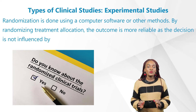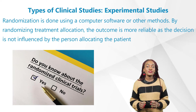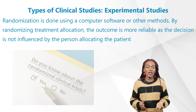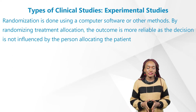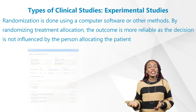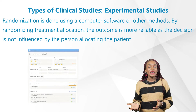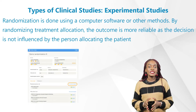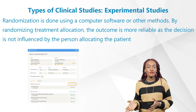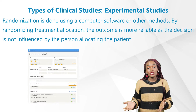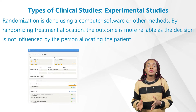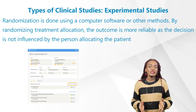This process of randomization is done using computer software or other methods. By randomizing treatment allocation, the outcome is more reliable, as the decision is not influenced — whether subconsciously or consciously — by the person allocating the treatment.